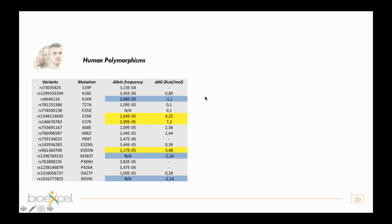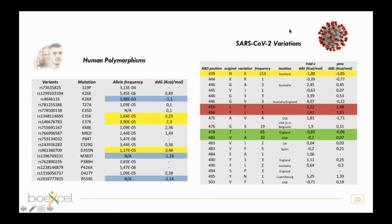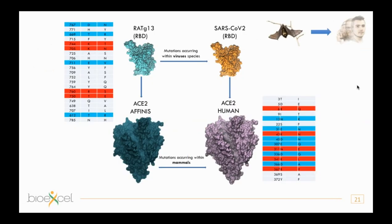Looking at virus variations: mutations giving higher infectivity also show higher frequency, meaning the virus is evolving towards greater infectivity by retaining those mutations. Mutations that reduce infectivity appear at lower frequency — consistent with negative selection pressure on those variants.